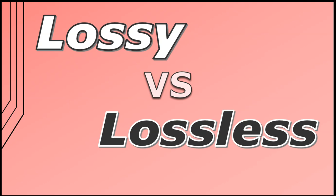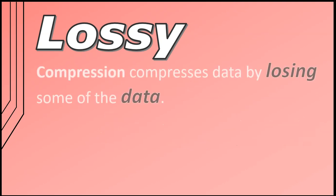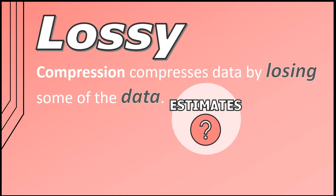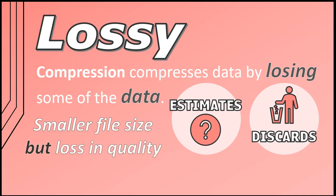There are two main types of compression techniques: lossy and lossless. Lossy compression compresses data by losing some of the data. This compression process involves making estimates or approximations of the data and discarding any information that is not necessary or that can't be seen. This can result in a smaller file size, but it also means that the compressed file is not an exact replica of the original and will result in a loss in quality.